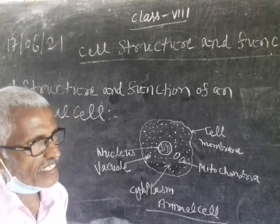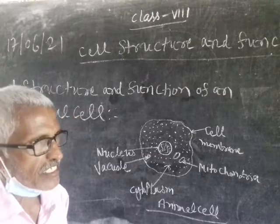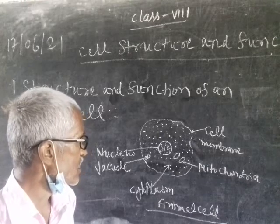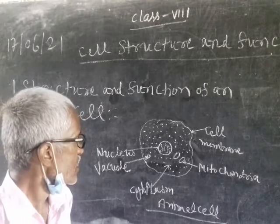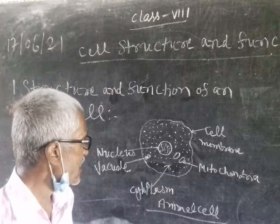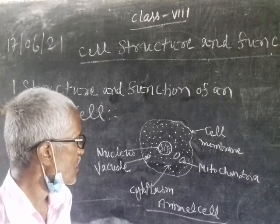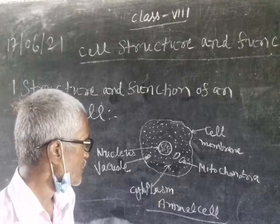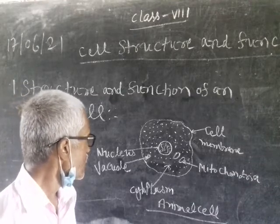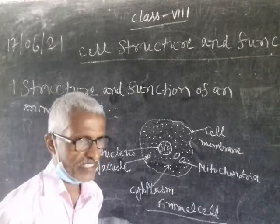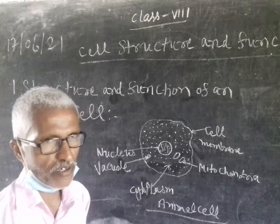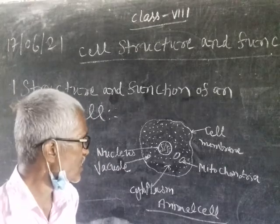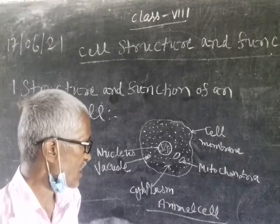Nucleus is a spherical structure which contains chromosomes inside it. It lies in the middle of animal cells. It is also known as the director of the cell because it controls all the activity of the cell.